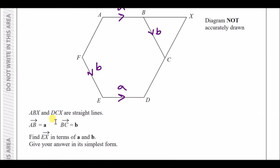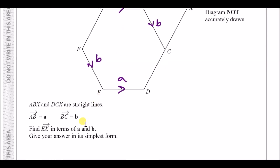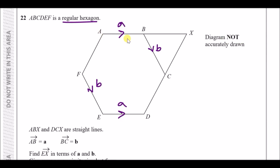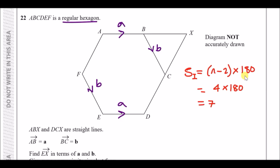They want us to find the vector from E all the way to X in terms of a and b. First, find the interior angle of a regular hexagon using the formula: sum of interior angles equals (number of sides minus 2) times 180. For a hexagon: (6 minus 2) times 180 equals 720 degrees. Dividing 720 by 6 gives each interior angle as exactly 120 degrees.